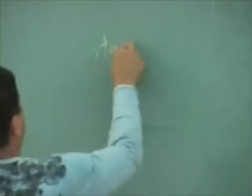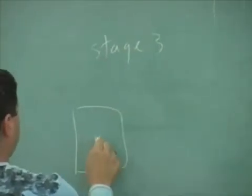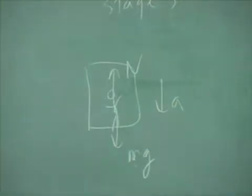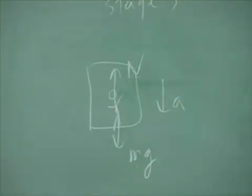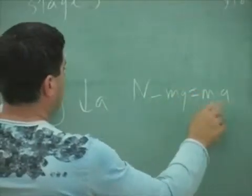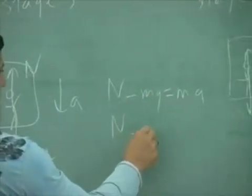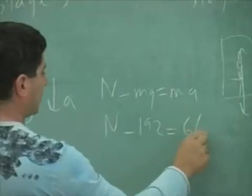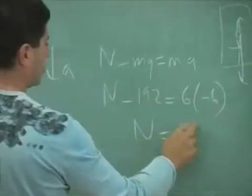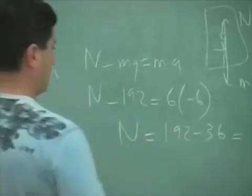And then stage three. The acceleration is down, and the acceleration is equal to negative six. Now, there's two ways to approach this. Let me show you both. One way is to say, N minus mg equals ma. N, we don't know. Mg is equal to 192. And then this one is equal to six times negative six. The acceleration is negative six. And the normal force is equal to 192 minus 36, which equals 156 pounds.